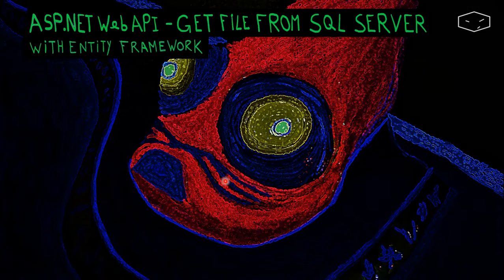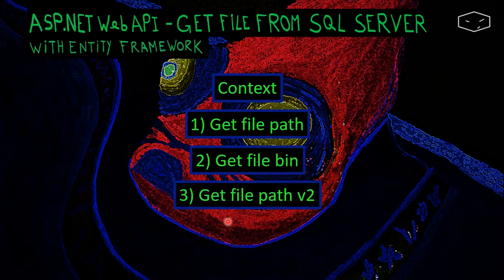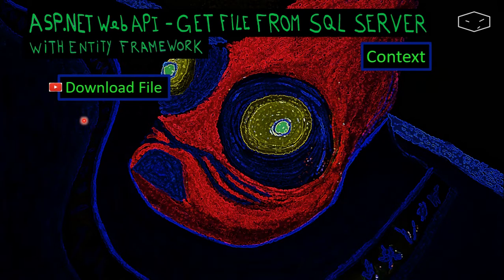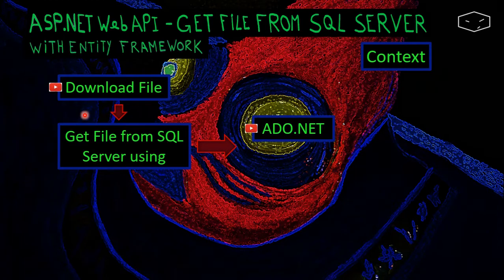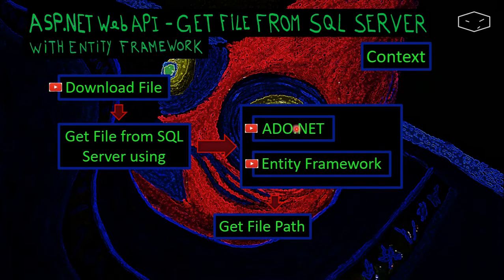Hello and welcome. First we will start by seeing why I did this video, and next we will do the code for get file path, get file binary from the database, and a second version of get file path. Previously I did a video about downloading a file, then we moved to get file from SQL Server using ADO.NET, and now this is the same but with Entity Framework.